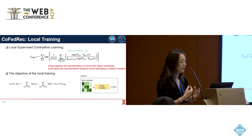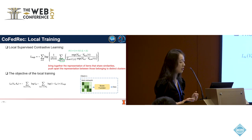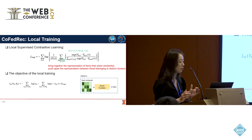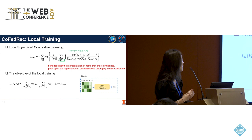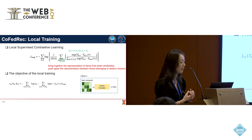Using label information, supervised contrastive learning aligns representations by bringing pairs with the same class label closer and pushing pairs with different class labels apart, improving representation quality. In our case, items are categorized into different categories, so items within the same cluster are treated as positive pairs, and those from disparate clusters are treated as negative pairs. We introduce supervised contrastive learning into the local training process of each client, where the objective is to minimize the binary cross-entropy loss plus the supervised contrastive learning term.